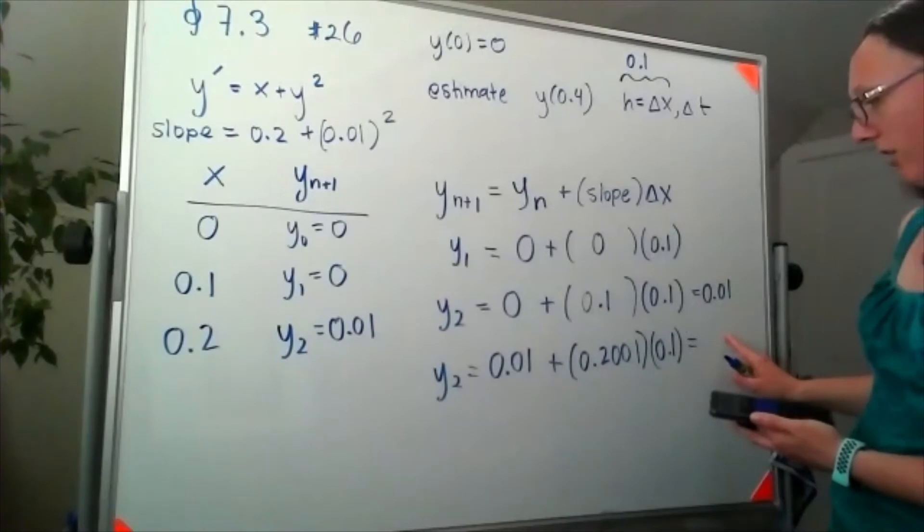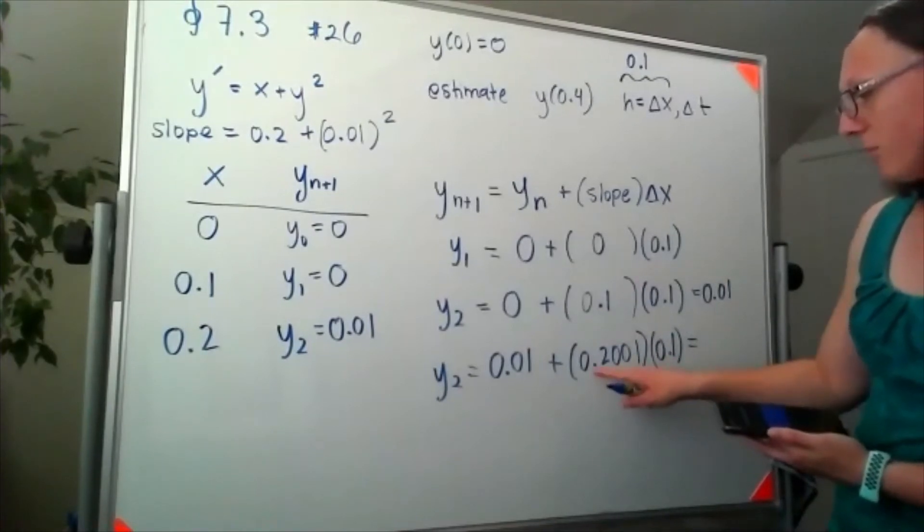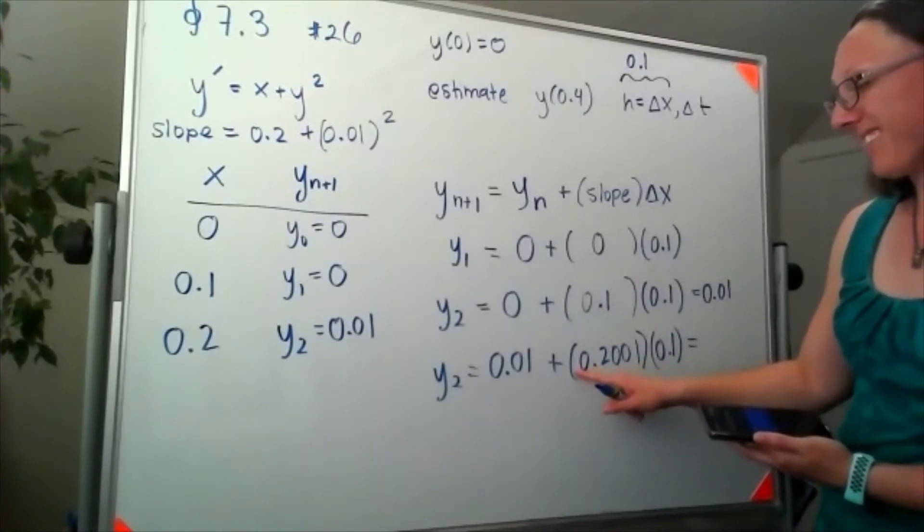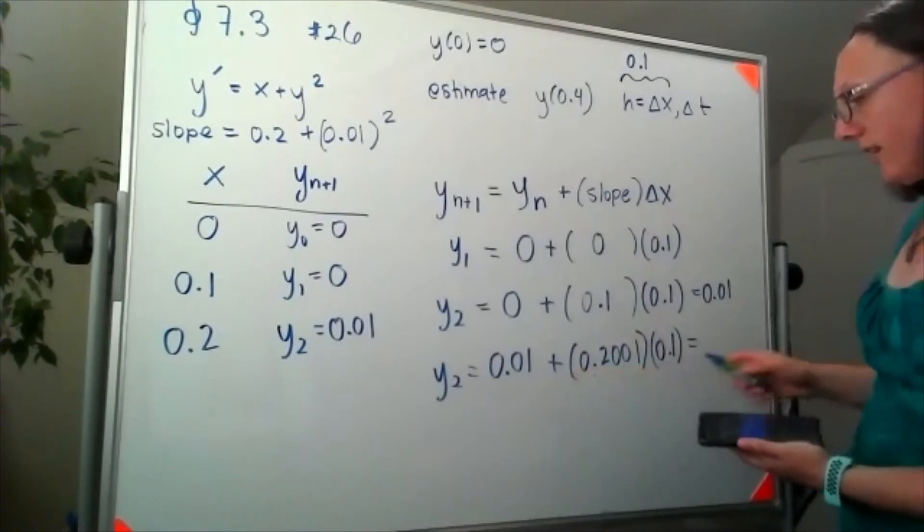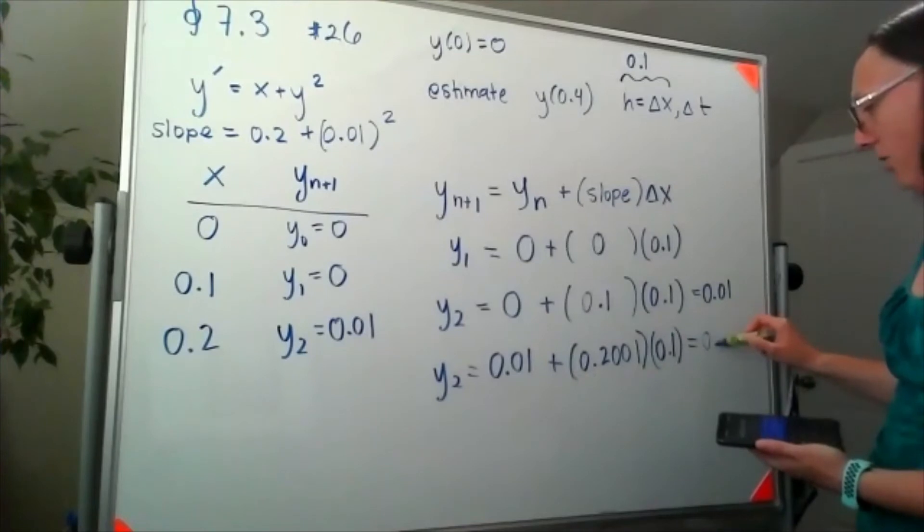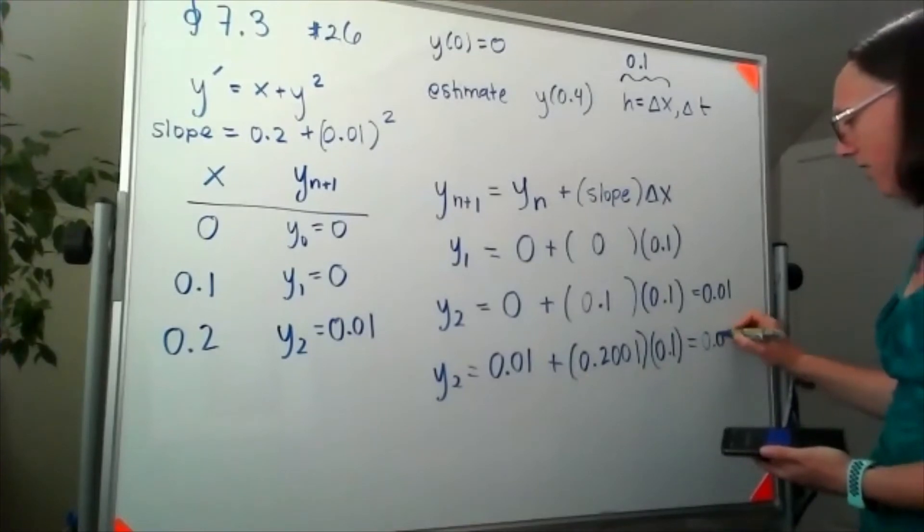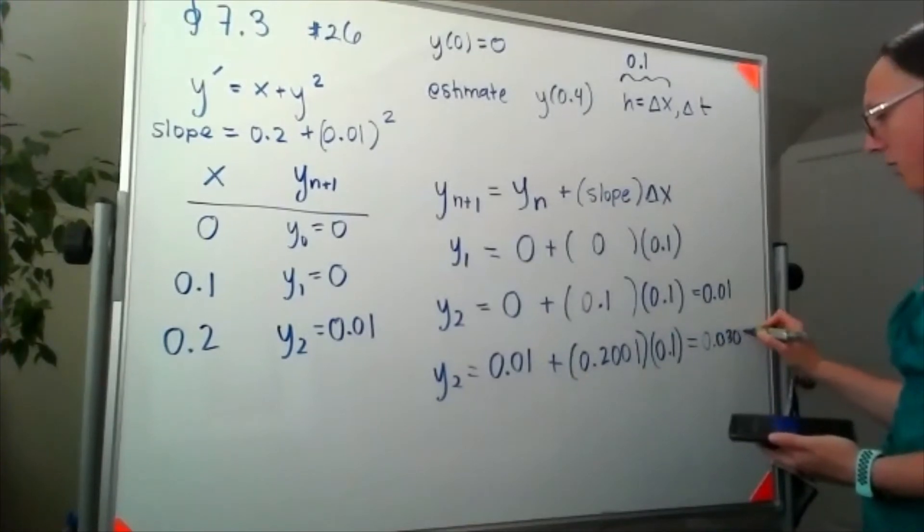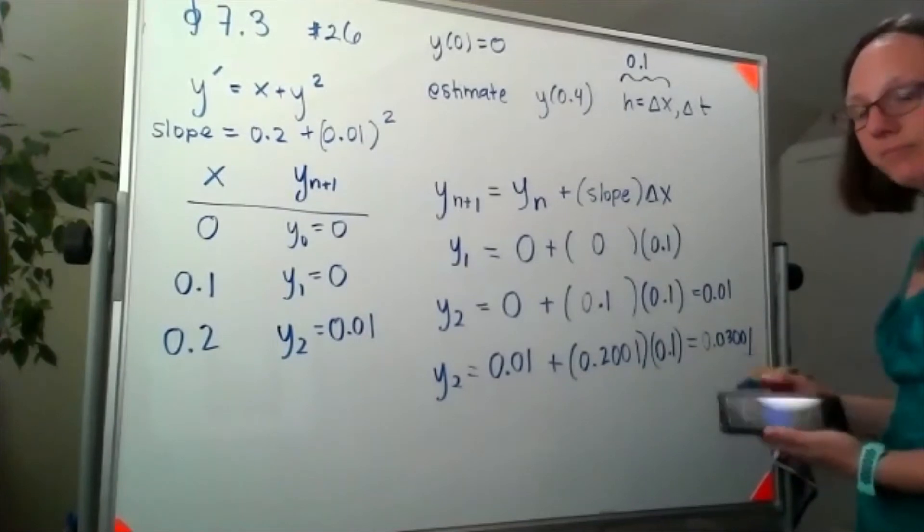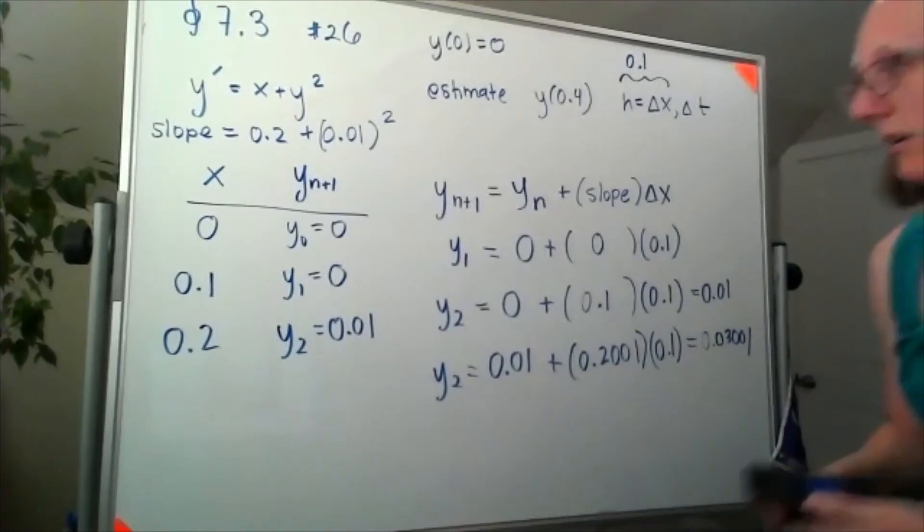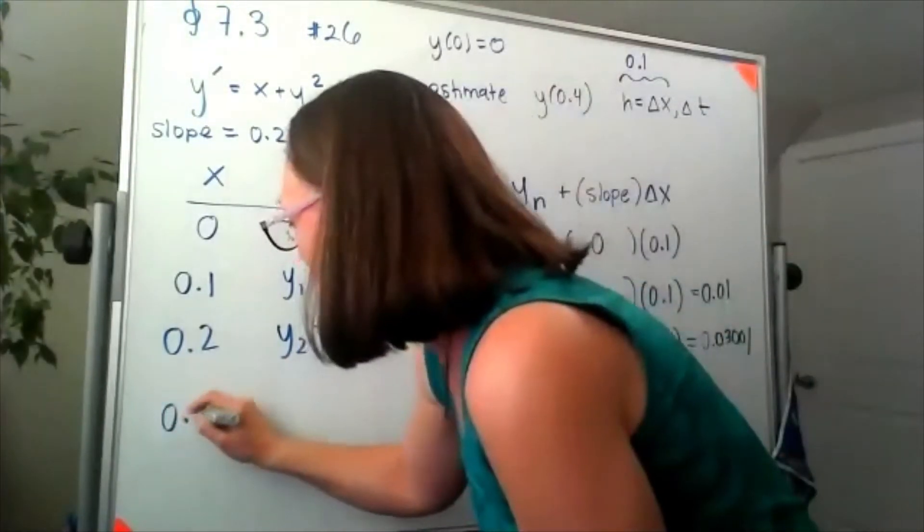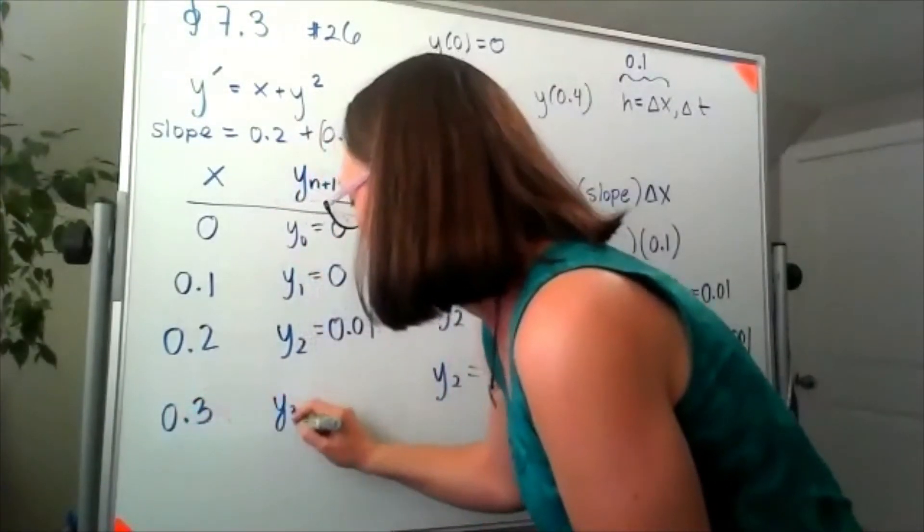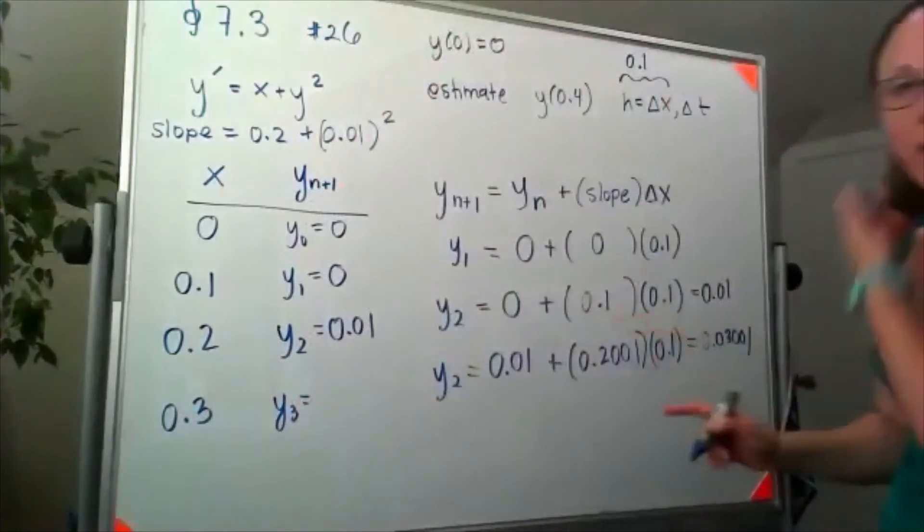When I multiply these together, it's going to move that decimal point one place to the left, which looks like it's going to give me 0.03001. We are now standing at 0.3 with a new y value of 0.03001.